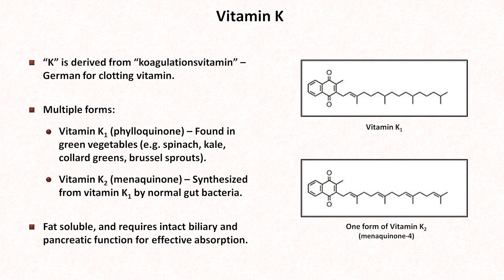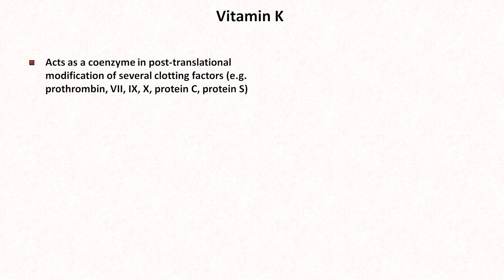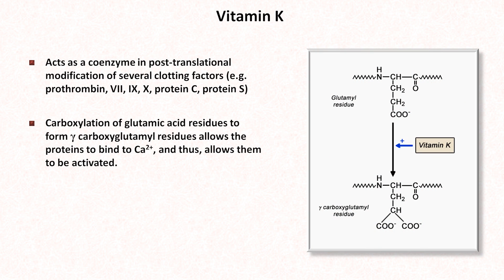Vitamin K is fat soluble and requires intact biliary and pancreatic function for effective absorption. The role of vitamin K is to act as a coenzyme in the post-translational modification of several clotting factors, specifically prothrombin, factors 7, 9, and 10, as well as protein C and protein S. It aids in the carboxylation of glutamic acid residues to form gamma-carboxyglutamyl residues, which allows the proteins to bind to calcium and thus allows them to be activated.